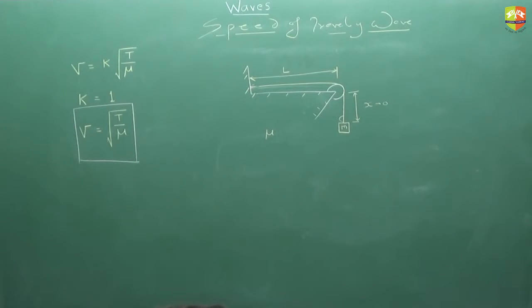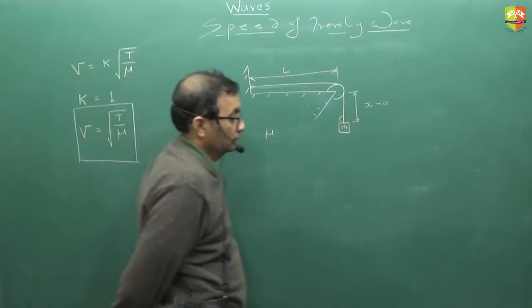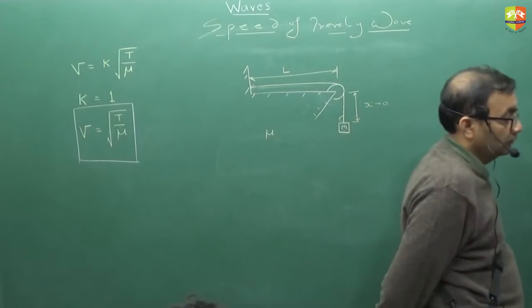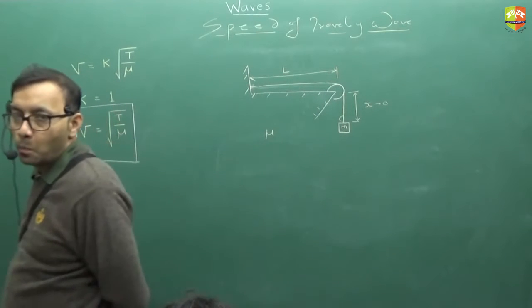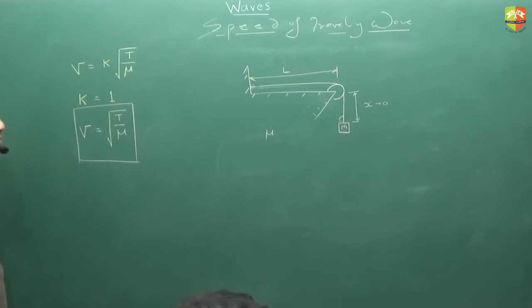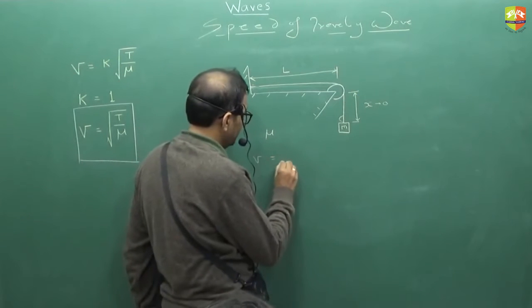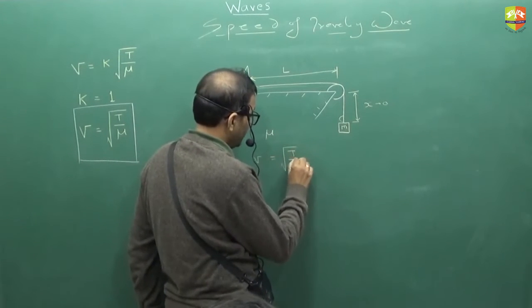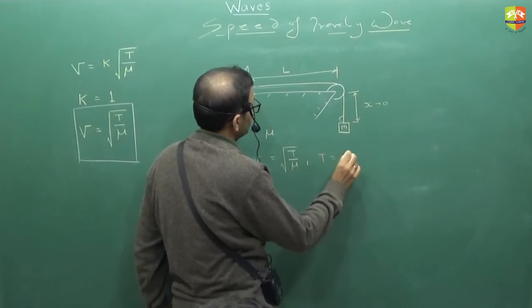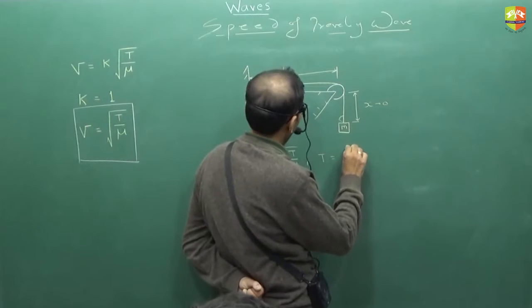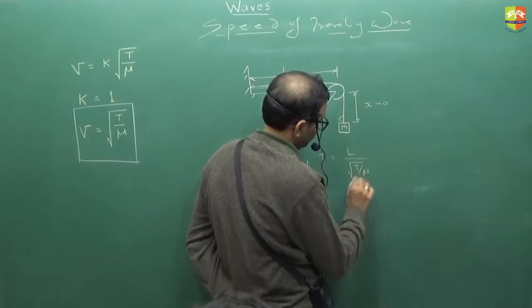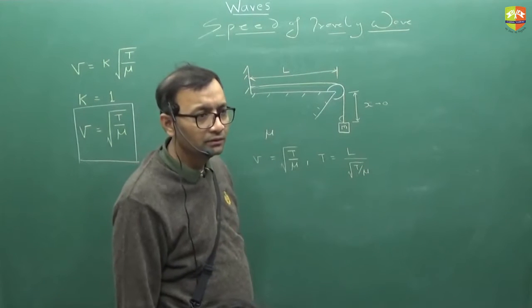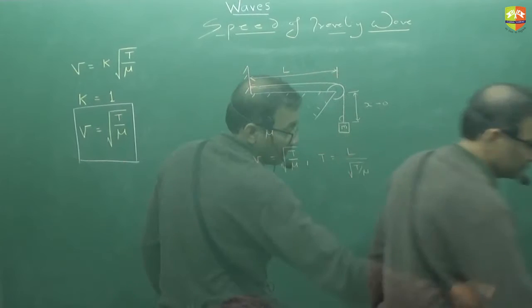So mu is given. All right, it's straightforward. So velocity of the disturbance is root over T by mu. So the time is l by root over T by mu. Straightforward, simple. Okay. Do this one.